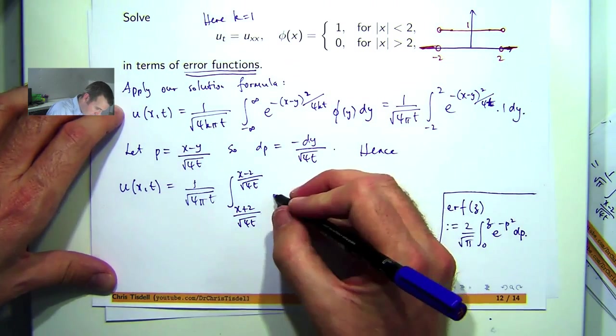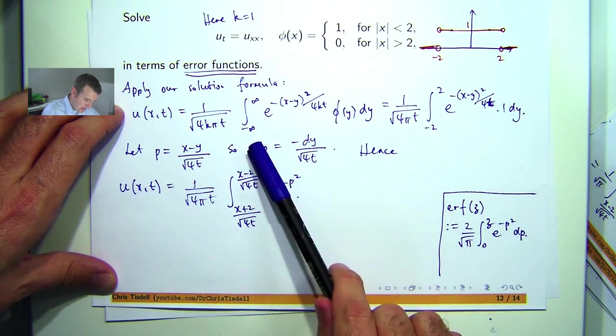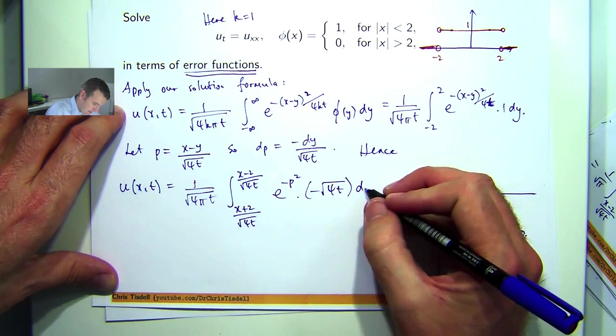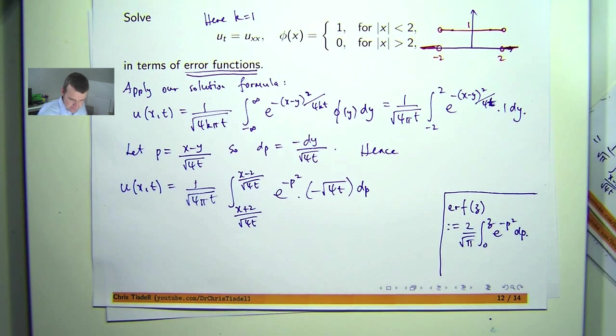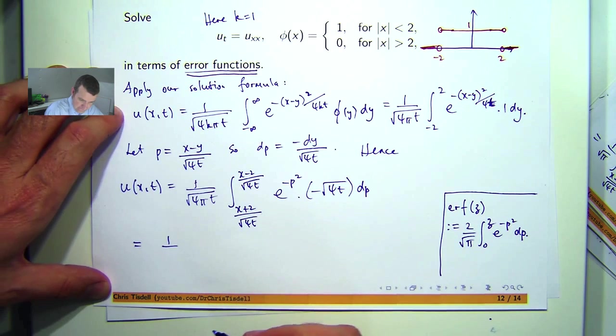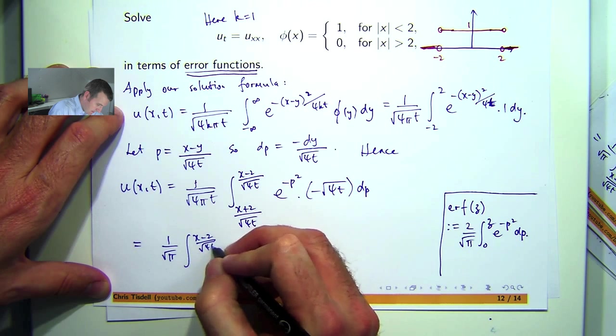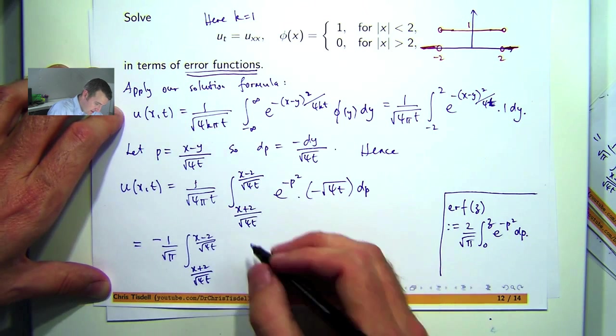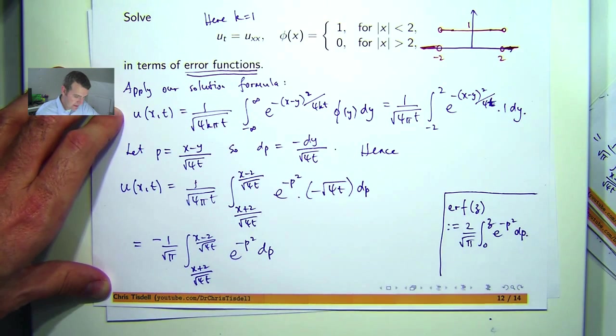So I have e to the minus p squared times, coupled with dy. So if I pull that up there and pull the minus sign to the other side, then I'll have the following. So you can now see that this is going to cancel with this. So I'll get something like the following. The root pi will be left over. And there will be a negative sign out the front. So this is starting to look a lot like this now.